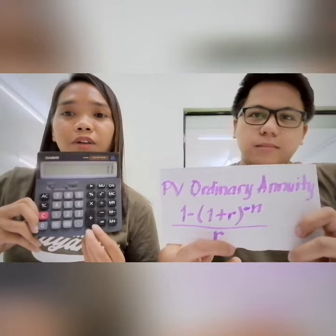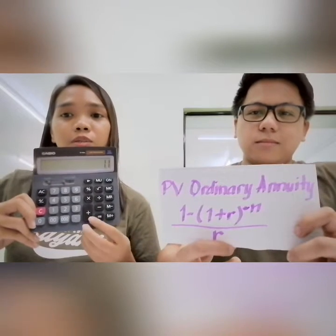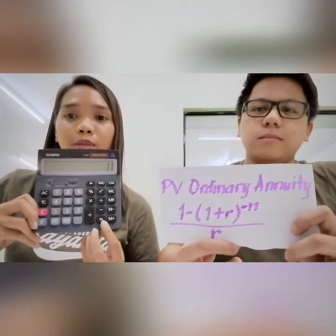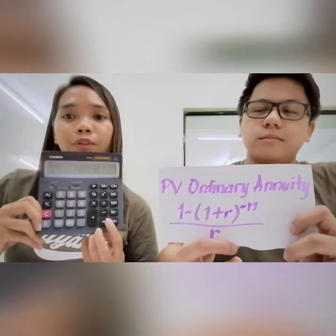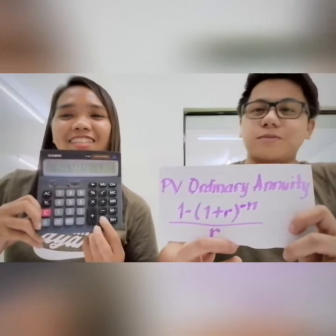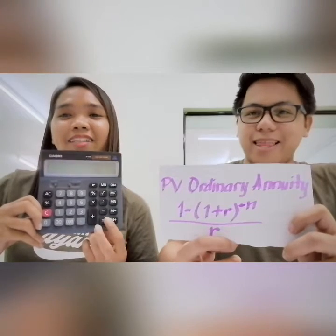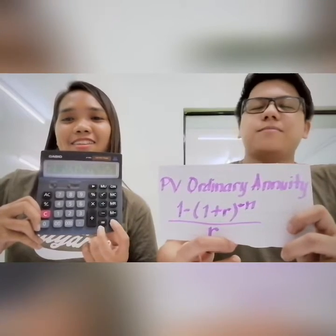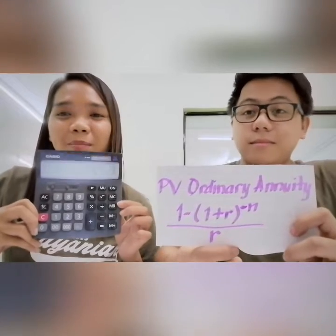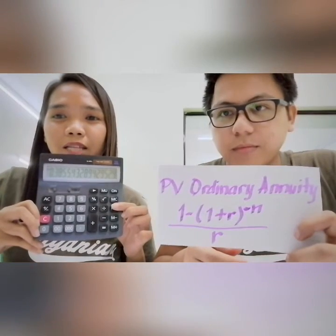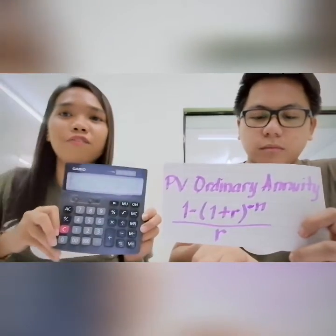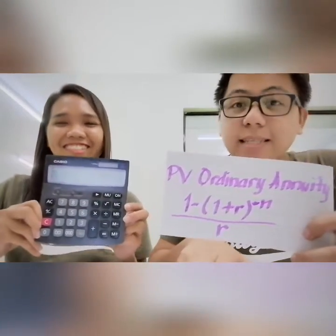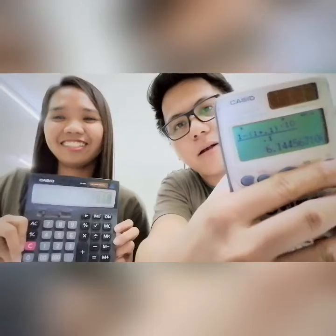Since we are computing the present value of ordinary annuity for 10 years, we press the equal sign and M+ together 10 times: 1, 2, 3, 4, 5, 6, 7, 8, 9, 10. Then we press memory recall to get the present value of ordinary annuity — as simple as that. So we get 6.1446, which is the same present value factor: 6.1446.